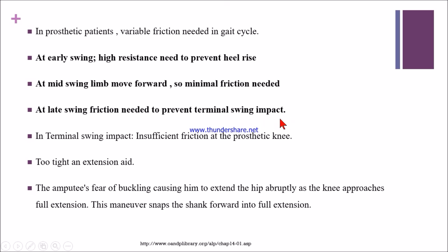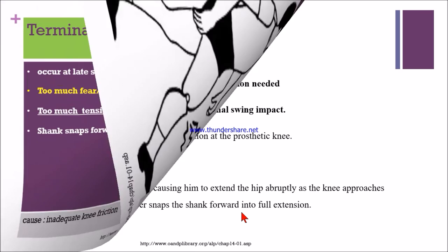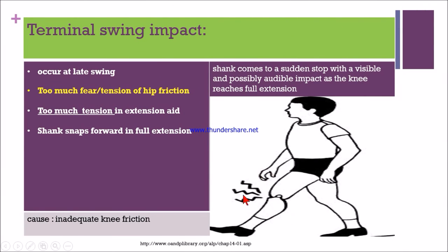If there is inadequate knee friction, terminal swing impact occurs. The causes include insufficient friction at the prosthetic knee and a tight extension aid. The patient fears knee buckling, causing them to extend the hip abruptly. The knee approaches full extension, snapping the shank forward with an audible sound — this is called terminal swing impact.